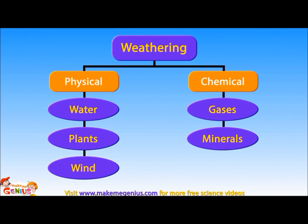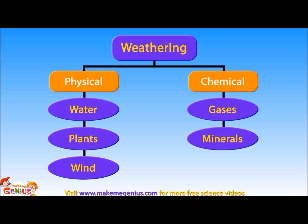So now you understand two different kinds of weathering. But remember, in nature this breaking down does not happen in days or months — it takes hundreds, thousands, or sometimes millions of years. Now let's move to erosion.